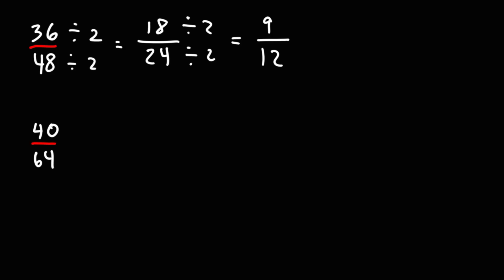Now 9 is not an even number. It's odd so we can't divide by 2. But the next number to look at is if you could divide by 3. 9 and 12 are multiples of 3 so we could divide both numbers by 3. 9 divided by 3 is 3. 12 divided by 3 is 4. So our answer for this example is 3 over 4.